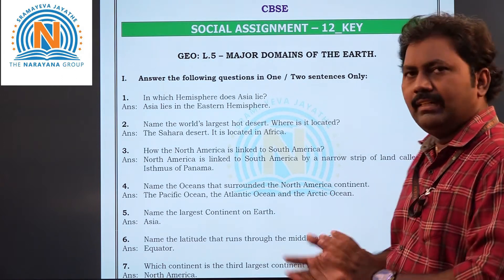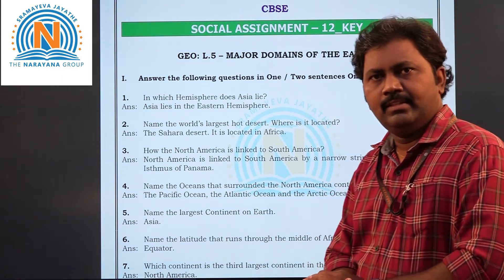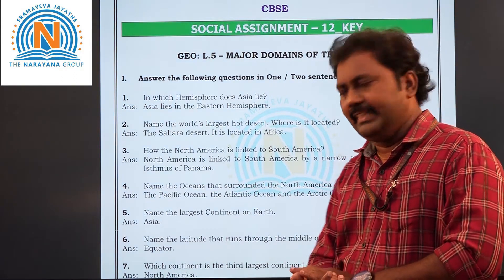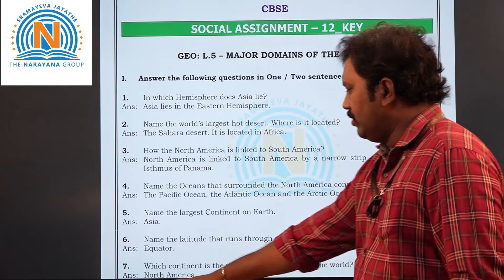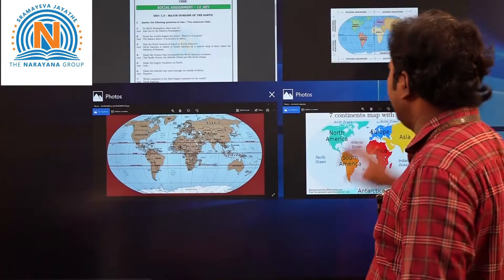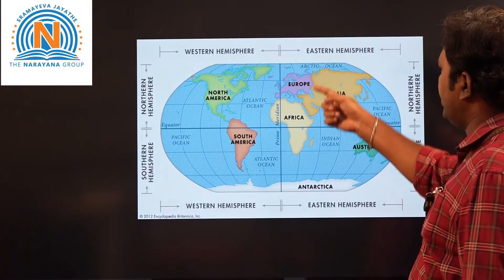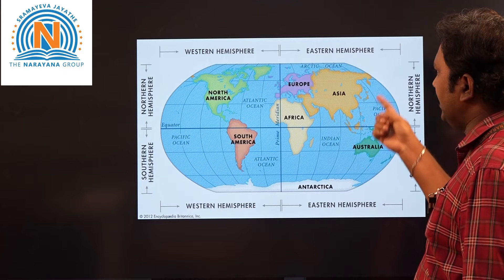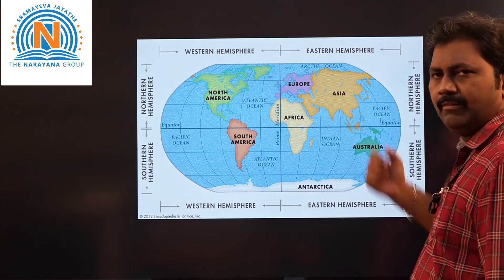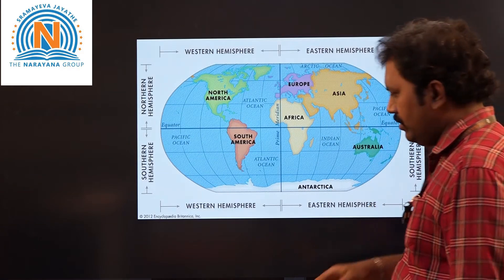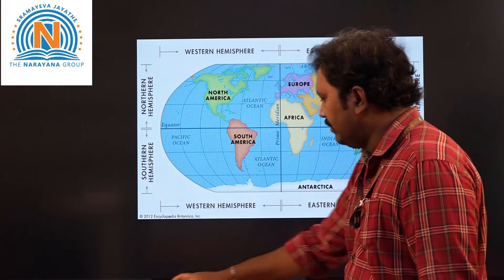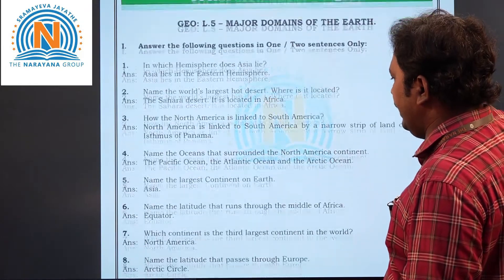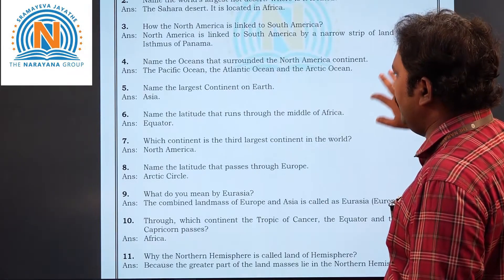Now let's move to the fifth question: name the largest continent on the earth. Obviously, that is Asia. See here — the largest continent in the world is Asia. This is Asia. Clear, children?